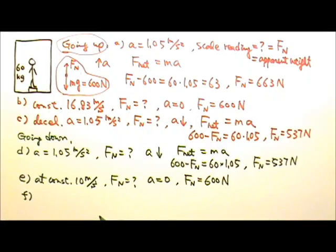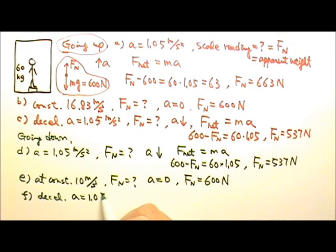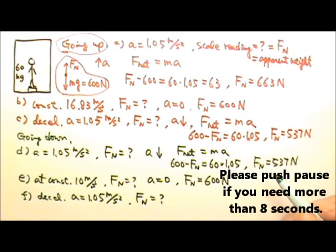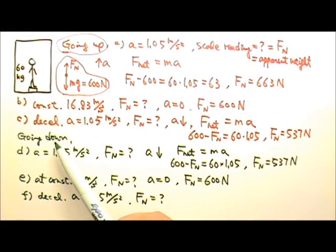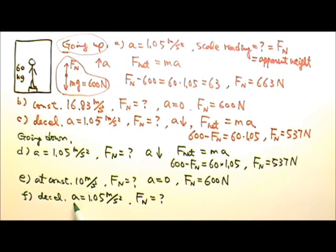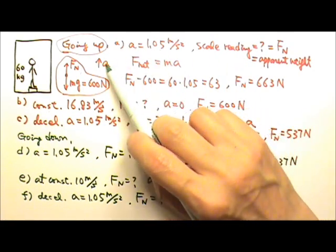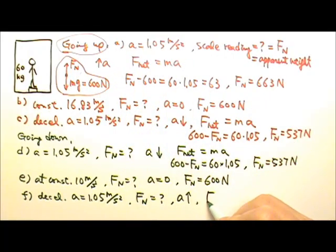Part F: The elevator has to slow down to a stop while going down. Suppose it decelerates at 1.05 meters per second squared. If the elevator is going down and slowing down, the acceleration is in the opposite direction to velocity — so acceleration is upward at 1.05. An upward acceleration is the same as Part A, which means the normal force is 663 newtons.